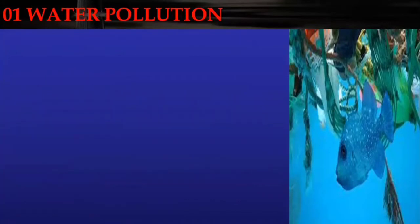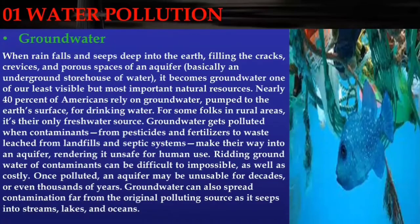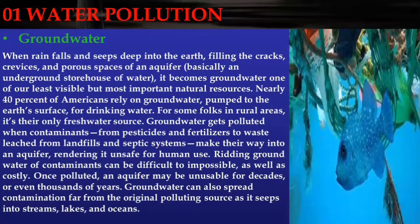Next comes groundwater. When rain falls and seeps deep into the earth, it fills the cracks, crevices, and porous spaces of an aquifer — basically an underground storehouse of water. This becomes groundwater, one of our least visible but most important natural resources. Nearly 40 percent of Americans rely on groundwater pumped to the earth's surface for drinking water, and for some rural areas it's their only fresh water source.